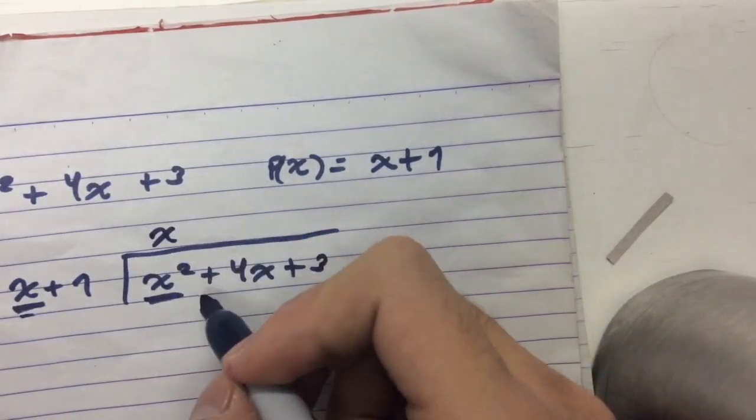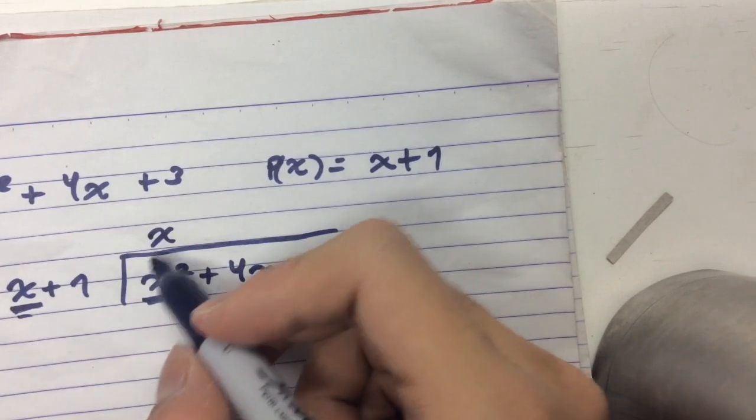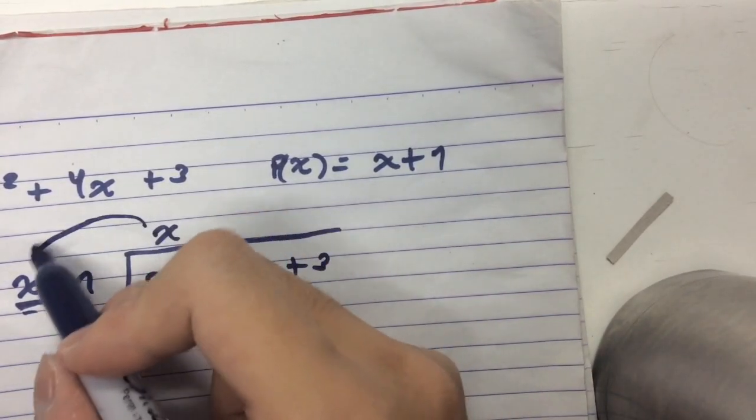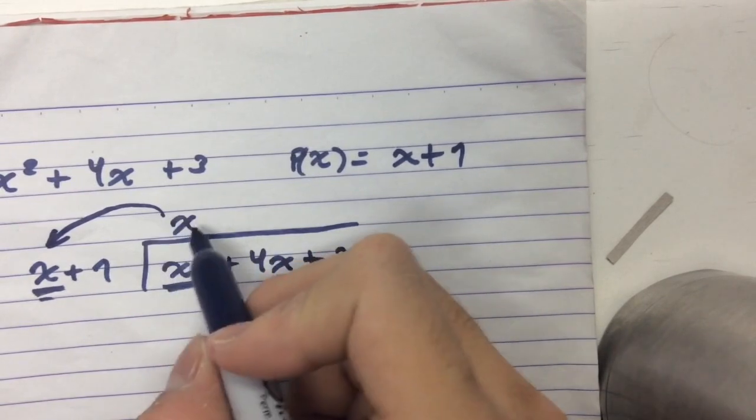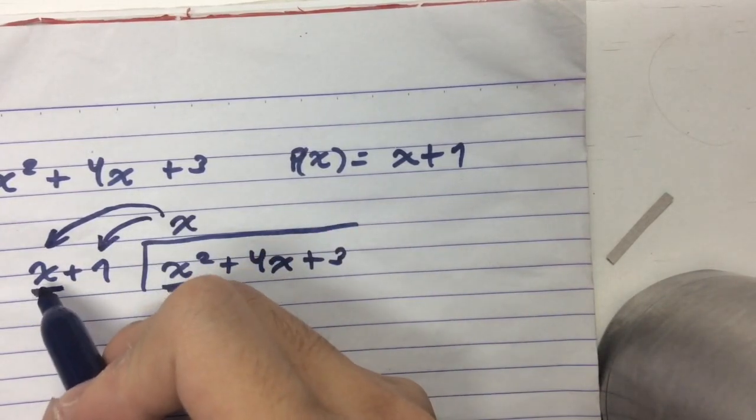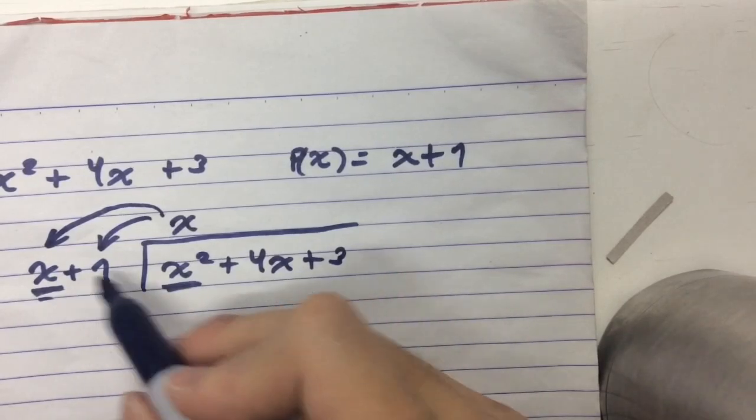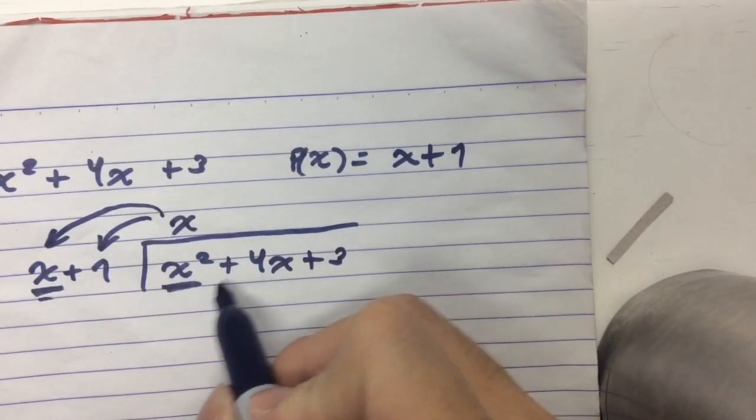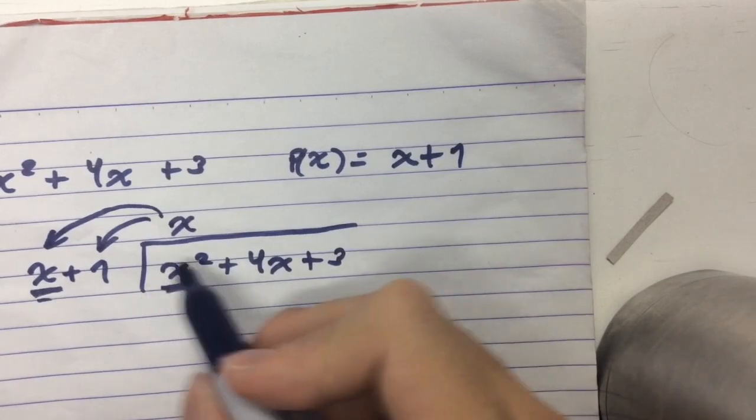But that doesn't necessarily mean we're done. What we do after we find the quotient is that we distribute the quotient with the divisor. And after having that, we subtract that product from these two terms over here.